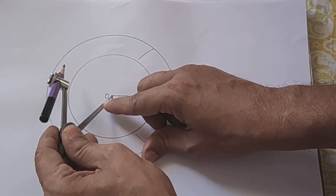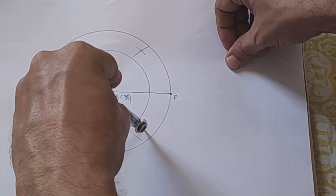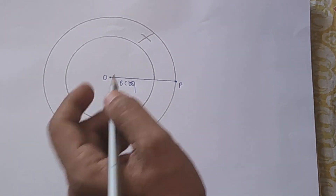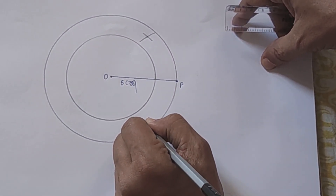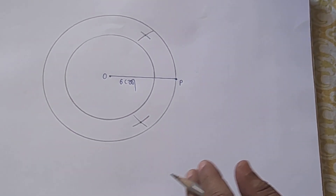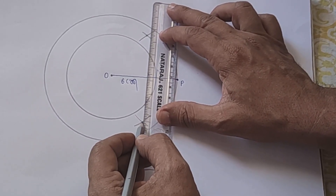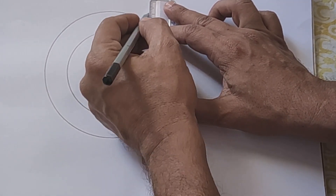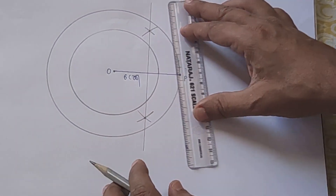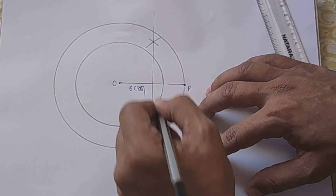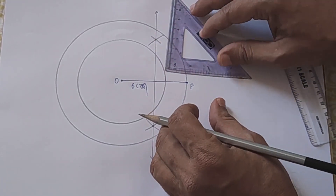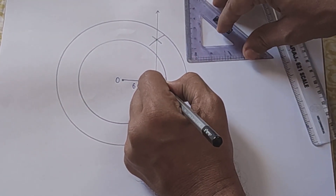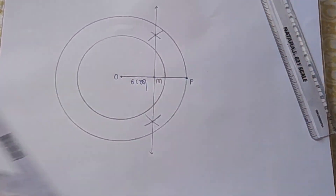Rounder ko P par se hataakar O par rakho. Upar ki or arc banao aur neeche ki or arc banao. Ab dono arcs ek doosre ko jahan intersect karein, wahan points banao. Dono points mein se pass hoti ek line draw karo. Yeh line segment OP ki perpendicular bisector ban gayi. Bisector means yeh OP ko us point M par intersect karegi. M kya ho jayega? O aur P ka midpoint.